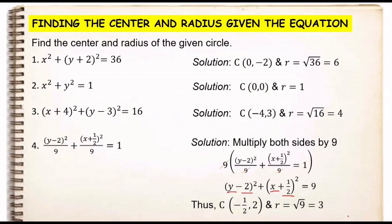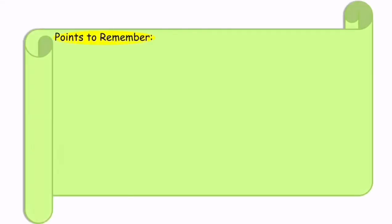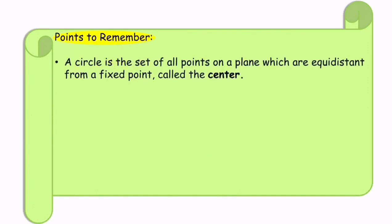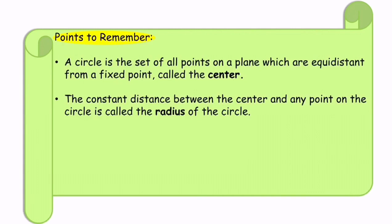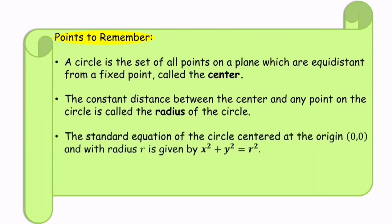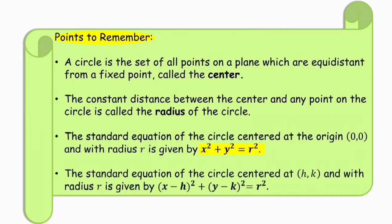The nice thing about a circle in standard form is that at a glance you can easily determine its center and radius. To summarize: a circle is a set of all points on a plane equidistant from a fixed point called the center. The constant distance between the center and any point on the circle is called the radius. The standard equation centered at the origin is x² + y² = r². If the center is at (h, k), the equation is (x − h)² + (y − k)² = r².